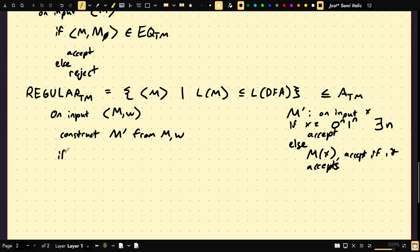If M prime is in REGULARTM then we know that we hit this branch here. Right. So we were able to determine if it accepts or not. Then we accept. Else we reject.